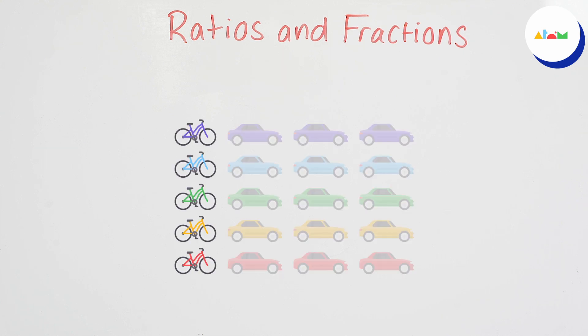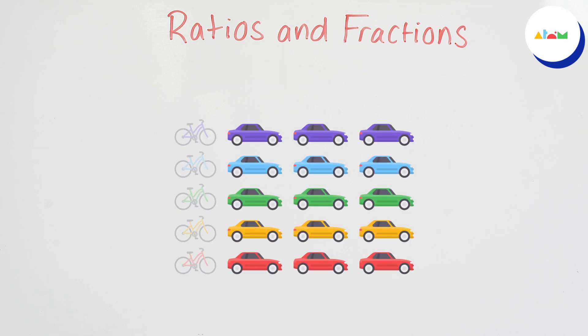In the car park there are five bikes and 15 cars. We could ask the question what fraction of the vehicles are bikes? To answer this we first need to calculate the total number of vehicles. Because of this the fraction will not express a relation between the bikes and the cars but rather between the bikes and the vehicles in total.